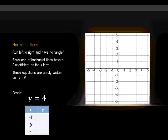Horizontal lines run left to right and have no angle, or as we'll come to know them later, slope. Equations of horizontal lines have a zero coefficient on the x term. Think about that for a moment—zero times x is just zero, which means there is no x in the equation. As a result, these equations are simply written as y equals some number. Y equals negative two, y could equal zero. As our example here, y equals four.